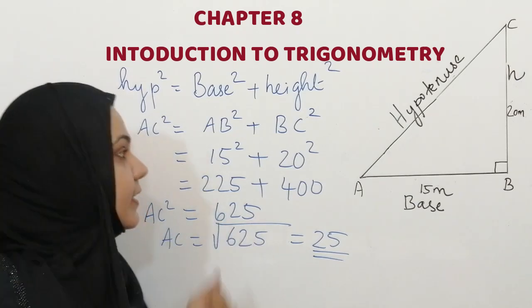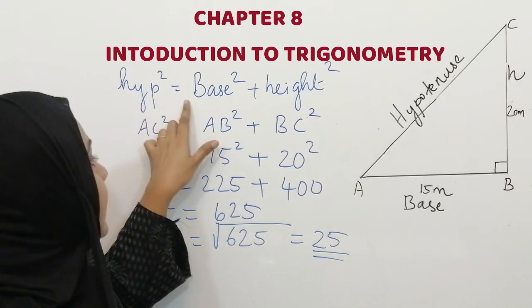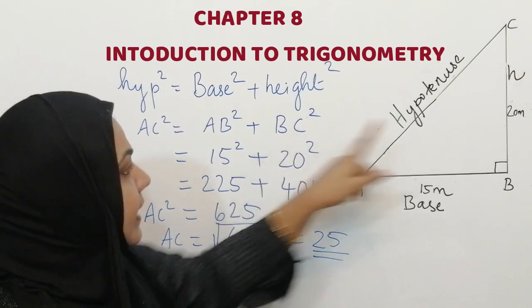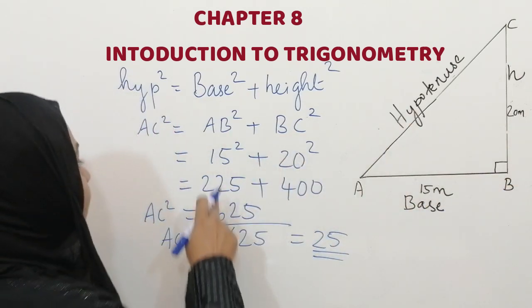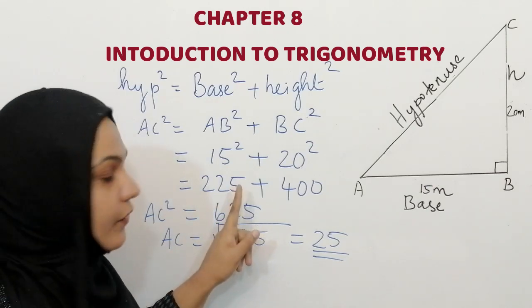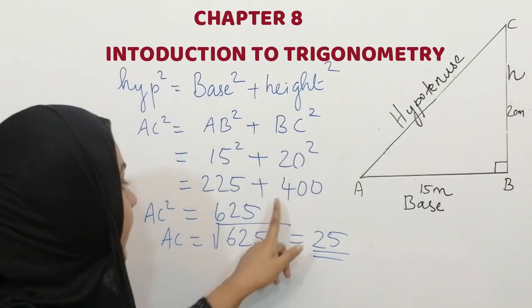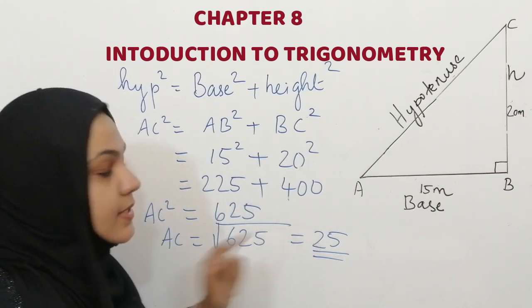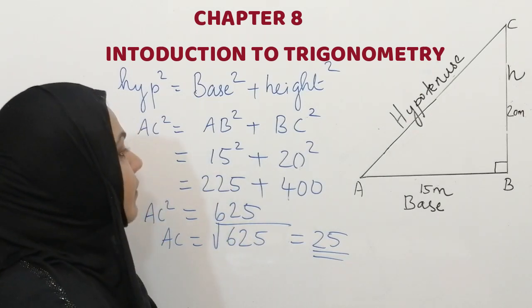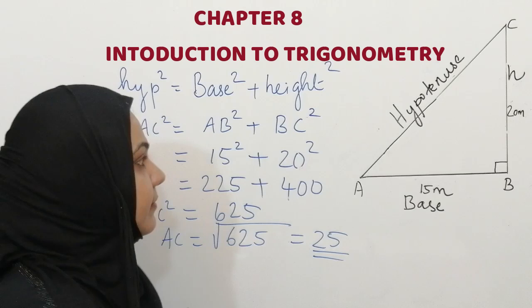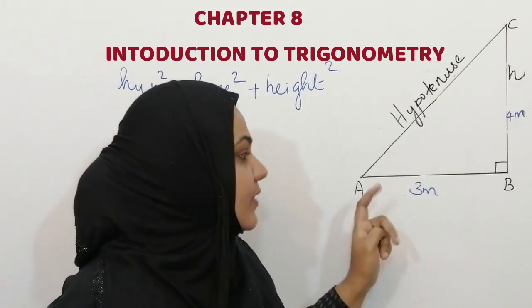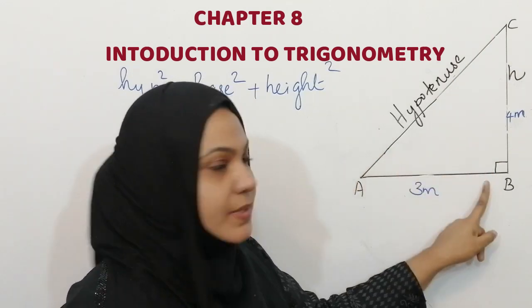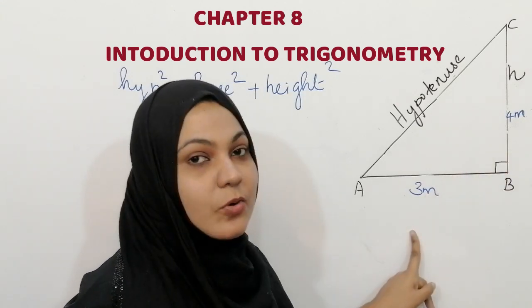I hope you understood that question very clearly. Now we can start our second question. This is triangle ABC right angle at B. You know that hypotenuse is the side opposite to 90 degrees, and the remaining two sides are called base and height.